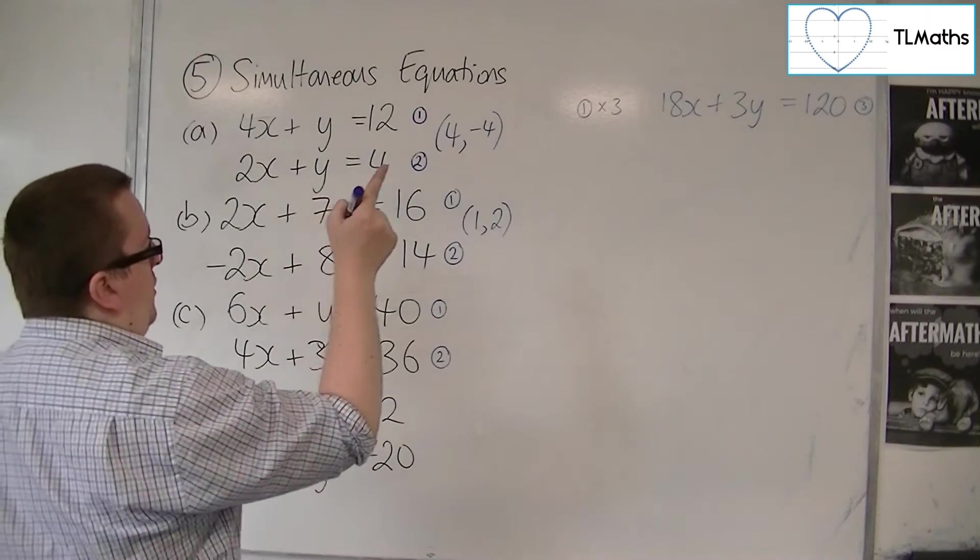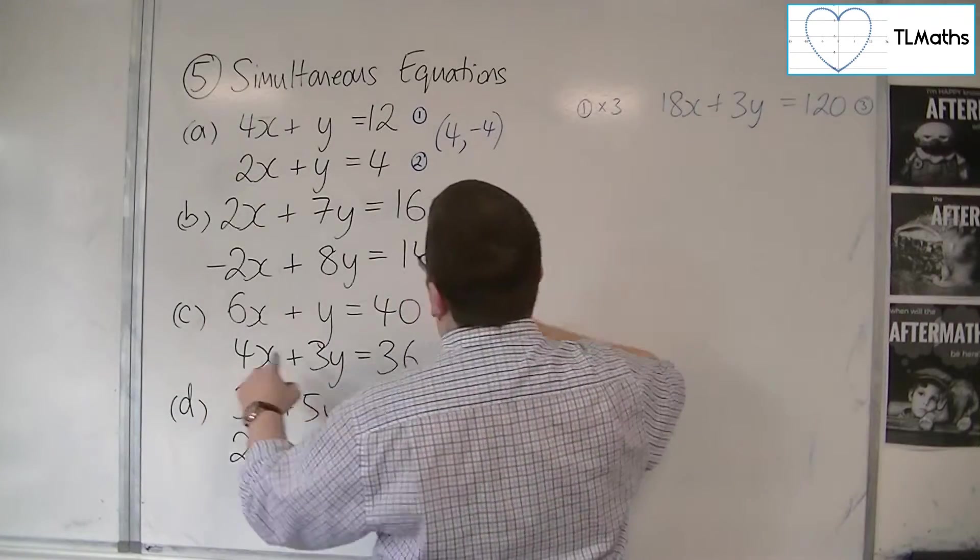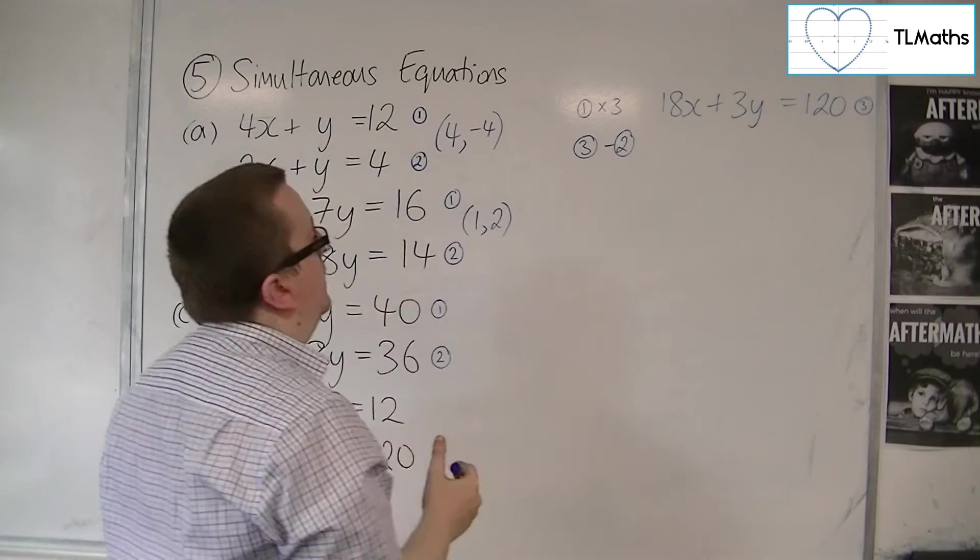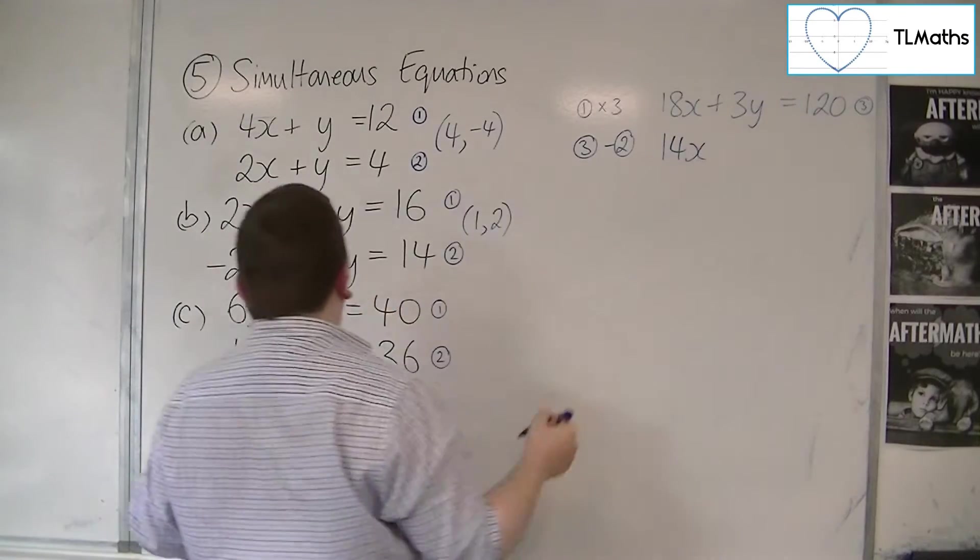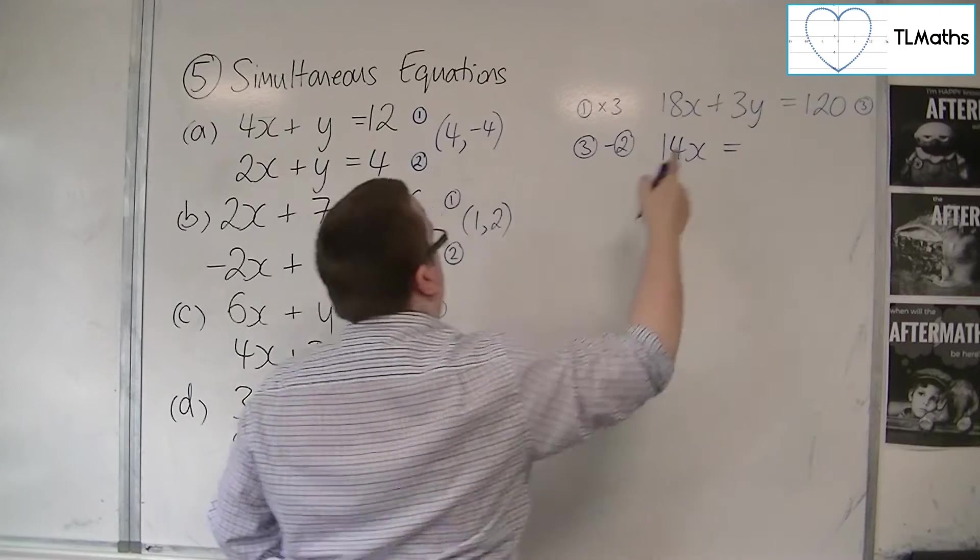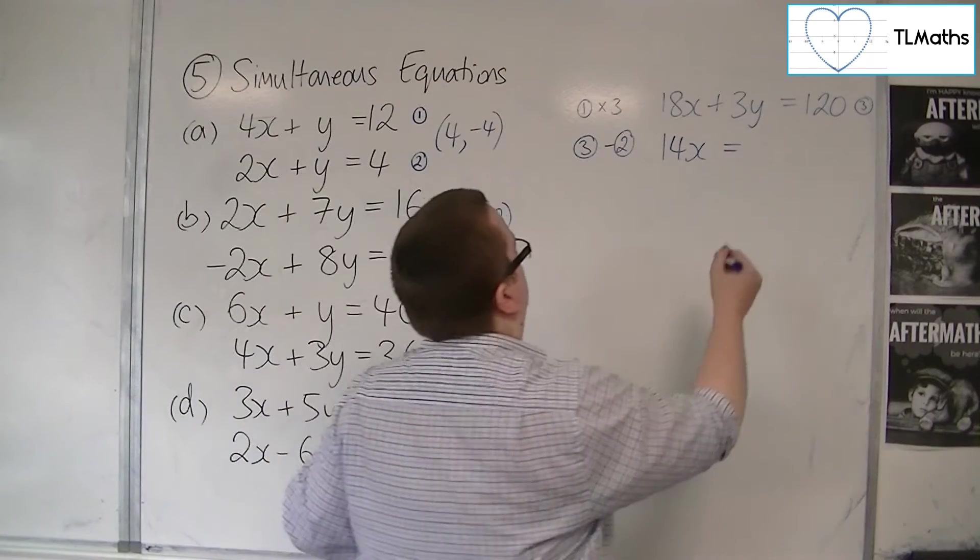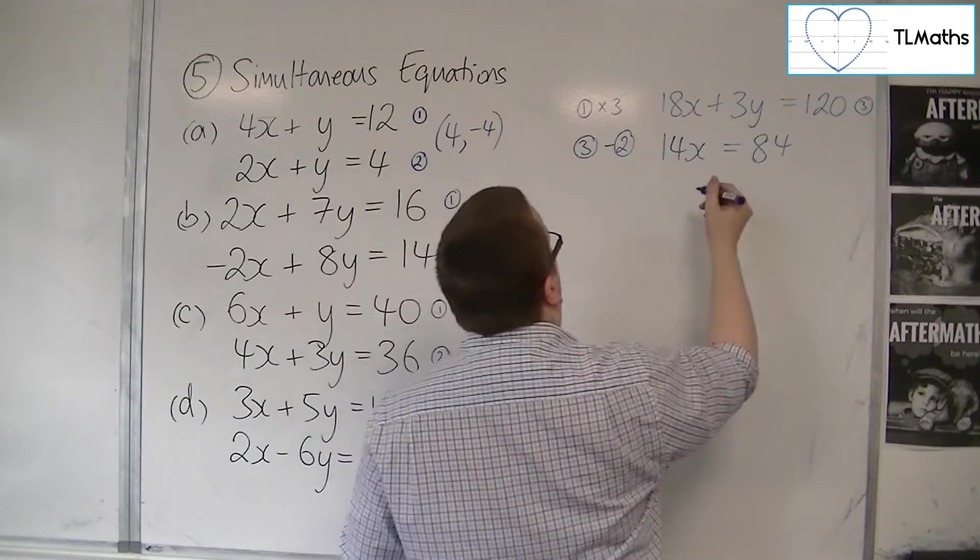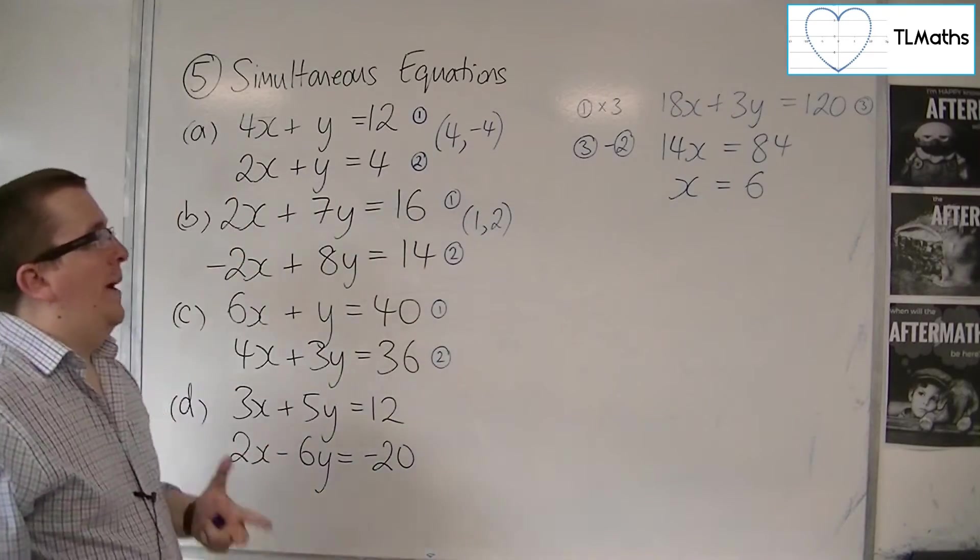So now I'm looking at equation 3 and equation 2. So I'm going to subtract equation 2 from equation 3. So number 3 take away number 2. So I have 18x take away 4x. That leaves me with 14x. I've got 3y. I've got 3y. Take away 3y is 0. And I've got 120 take away 36. And that gets me 84. So 14x equals 84. Divide both sides by 14. And we get 6. So x equals 6.